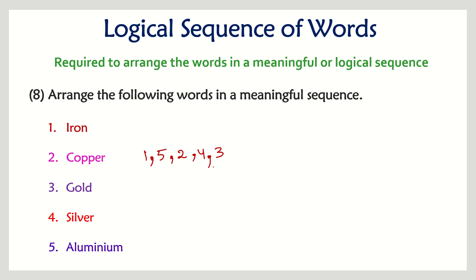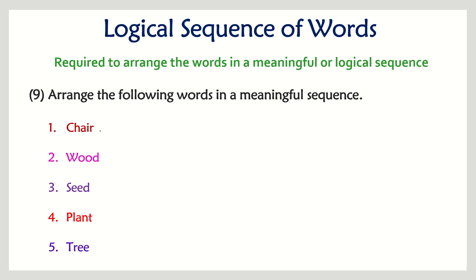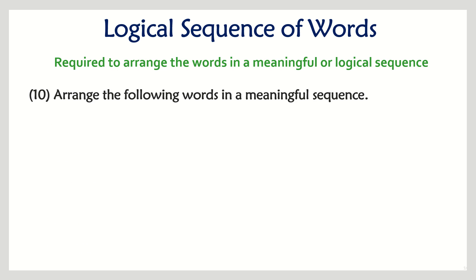Next question: chair, wood, seed, plant, and tree. The first option is obviously seed. From the seed you get a plant, the plant grows into a tree, you cut down the tree to get wood, and from the wood you make a chair. That is the logical sequence.